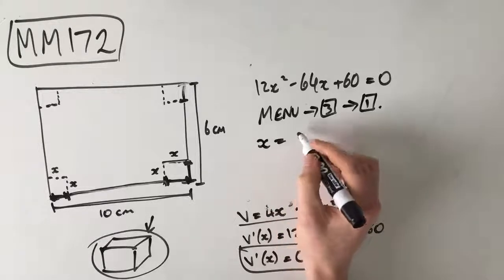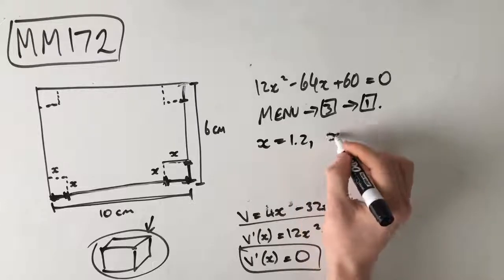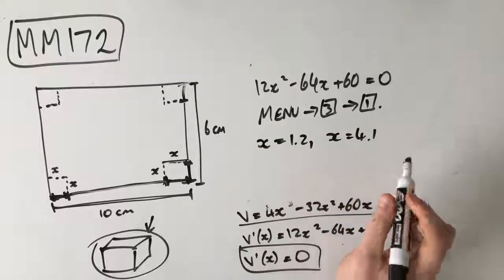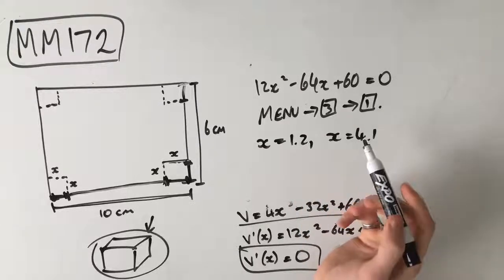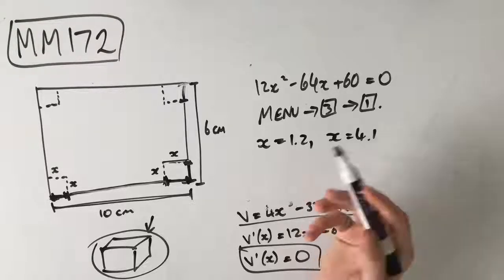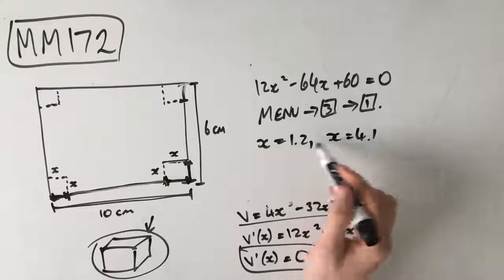x equals 1.2, or x equals 4.1. Now, we have to choose an answer, right? The multiple choice answers, there's only one in each answer, so we need to pick one of these.